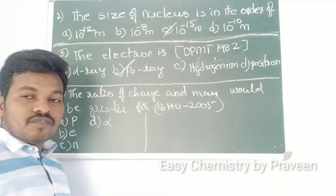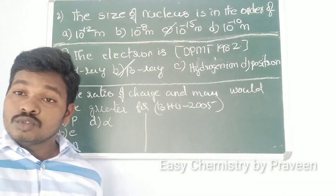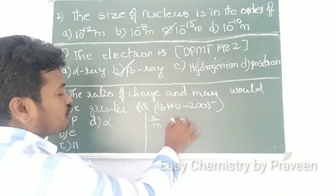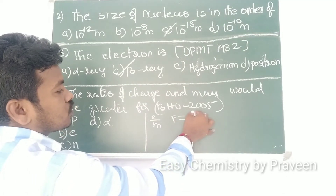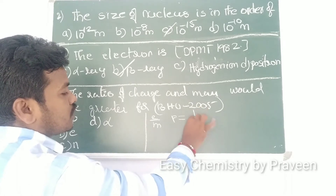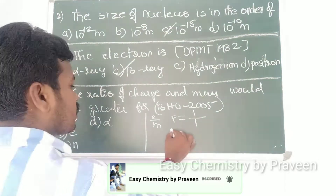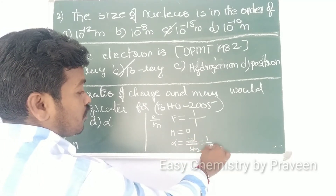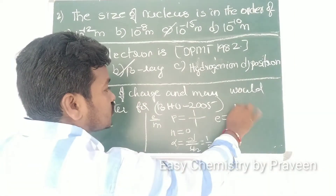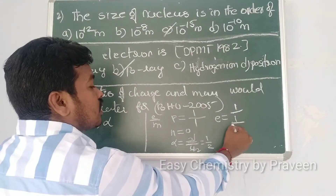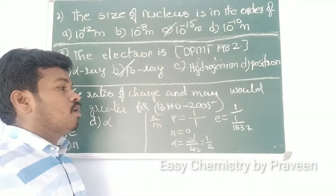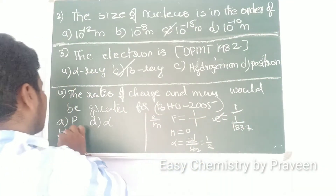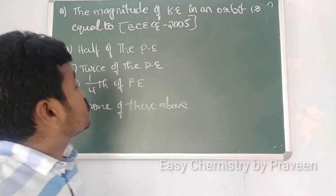The ratio of charge and mass would be greatest for — from Banaras University 2005 — options: proton, electron, neutron, and alpha particle. The e/m ratio: for a proton, charge = 1 and mass = 1, giving ~1. For a neutron, it's zero. For an alpha particle, charge = 2 and mass = 4, giving 0.5. For an electron, mass is 1/1837 of the proton, so the charge-to-mass ratio is greatest for electrons. Option B is correct.